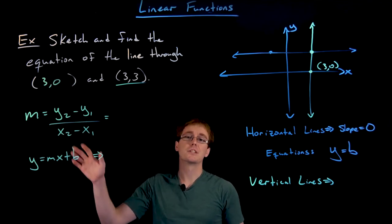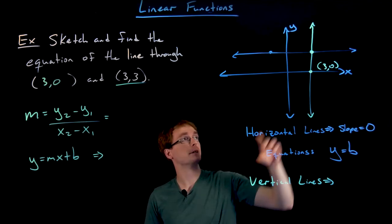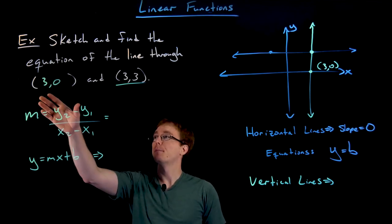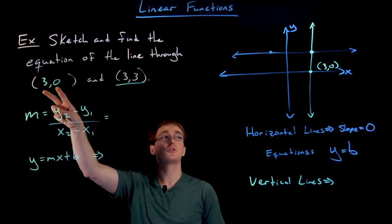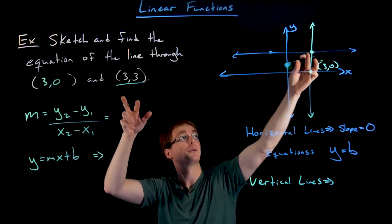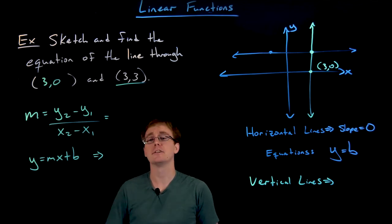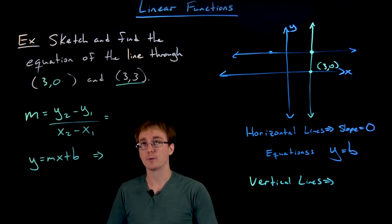So now we've just reset our last example for this information that we saw for our vertical line. Let's go through the same motions. We're going to sketch and find the equation of the line that goes through the point (3, 0) and (3, 3). Well, we've already sketched our lines, that vertical line. Now let's go ahead and try to find the equation starting with the slope.